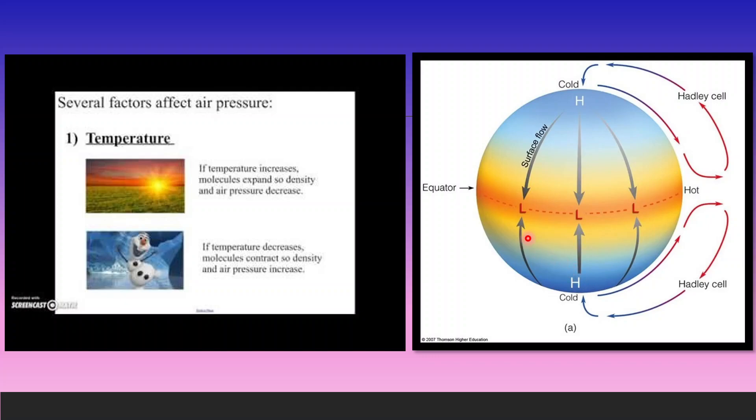This is the reason why we have a low pressure at the equator because temperature is very high over there, while the poles are having a high pressure. And what is the reason? The reason is the areas are very cold, so the density of air becomes high and high pressure is created along the polar regions.